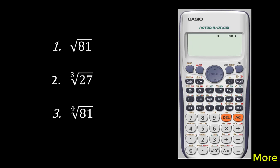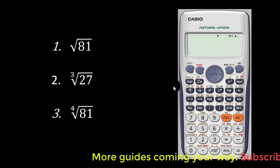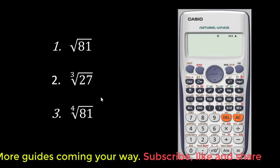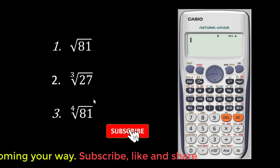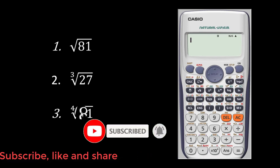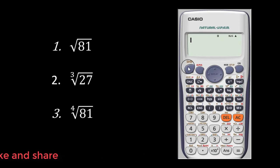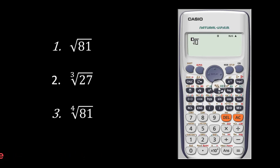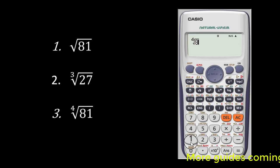Let's move to the third example of radicals or roots. There is no primary key to directly get this particular function, so for the fourth root, you press the shift key and press the power key again to access the secondary function — the box root of a box. You key in 4 outside, scroll inside and type in 81, and that gives you 3.